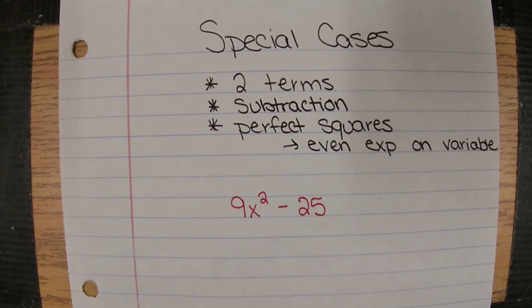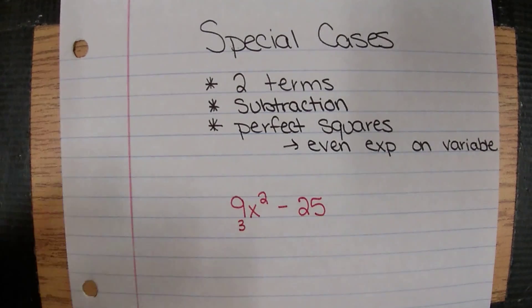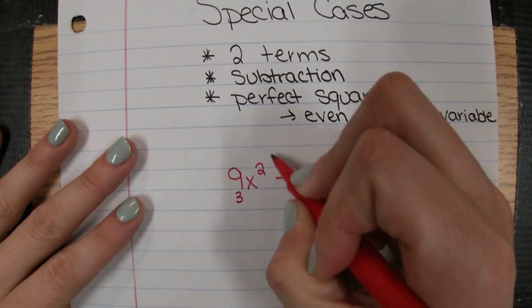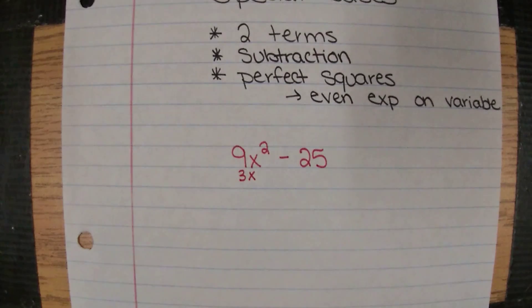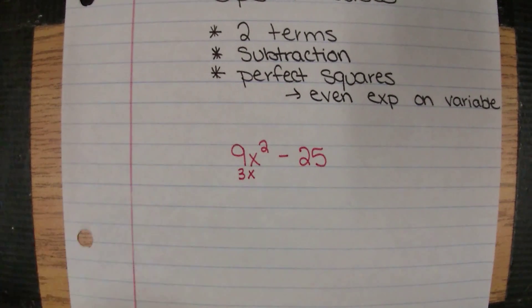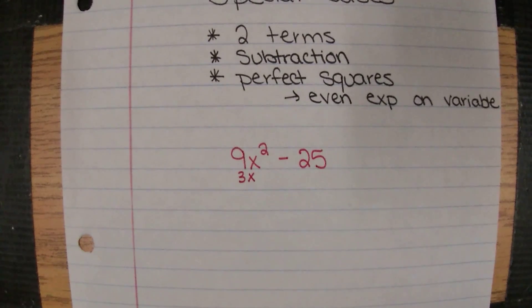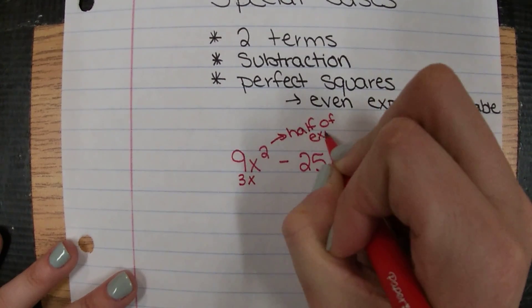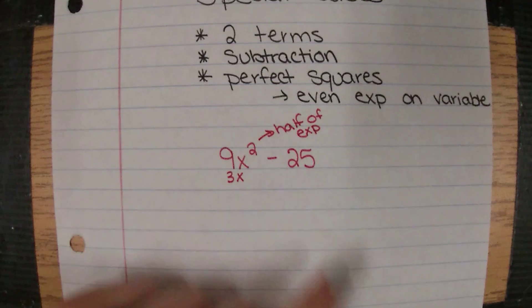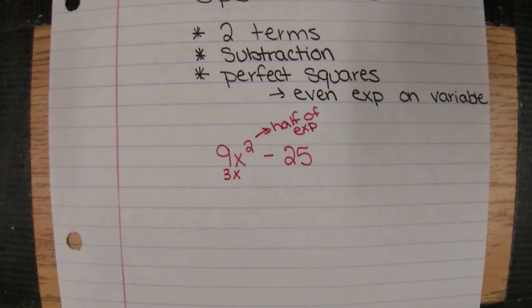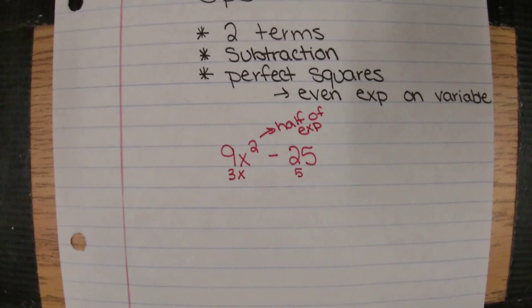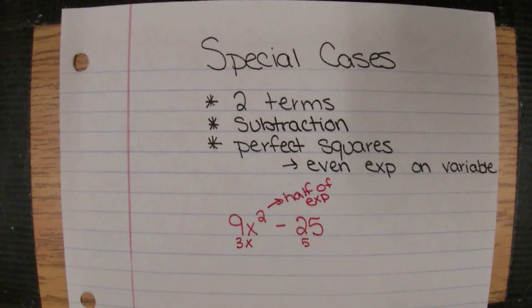Can we think of a number times itself that gives us 9? Yes, that's 3. If you weren't sure, you could check it in your calculator by taking the square root of 9. Then we're going to take half of the exponent because it's even. So 3x times 3x gives us 9x squared, so 9x squared is a perfect square. Then we'll check 25. Yes, 5 times 5 is 25. So this meets all of the qualifications.